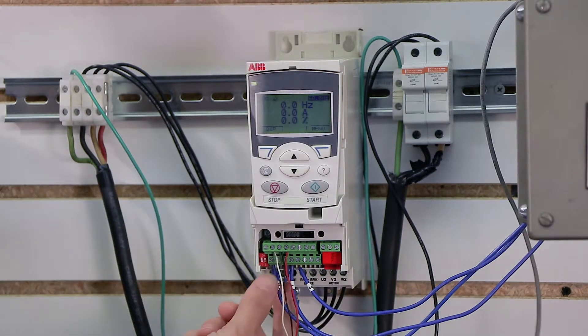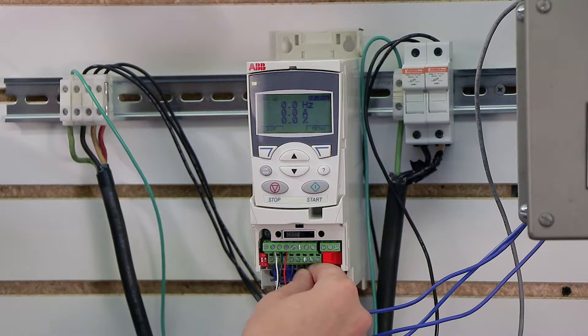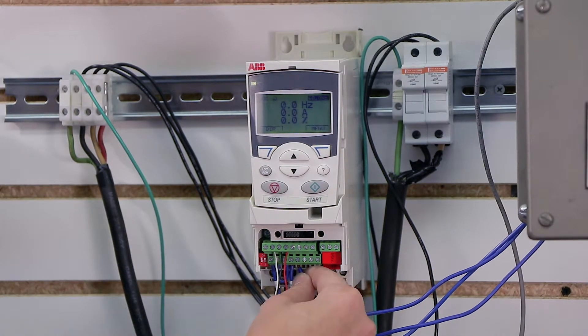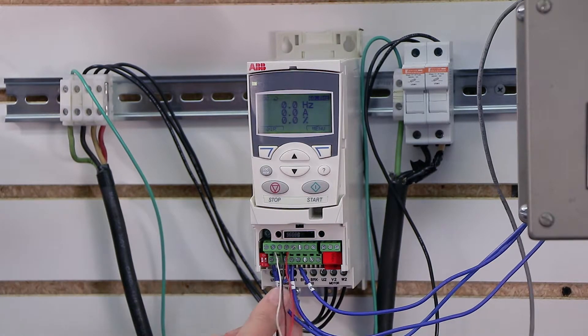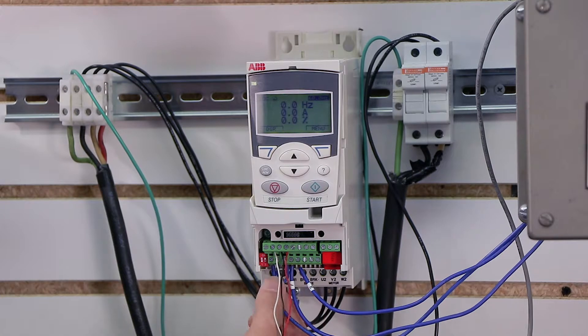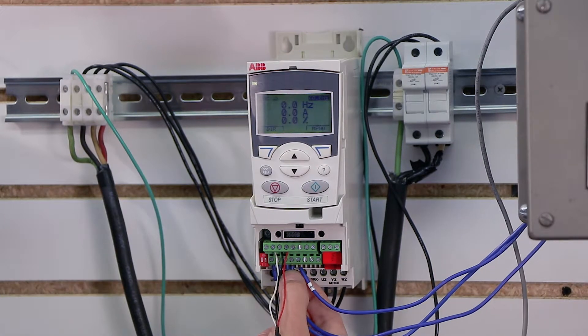When there's no electricity flowing from nine to 13, it's going to run forward. When our switch is closed, and electricity is flowing from nine to 13, it'll go in reverse. When electricity is flowing from nine to 12, the drive will start. When it's not flowing from nine to 12, it will stop.